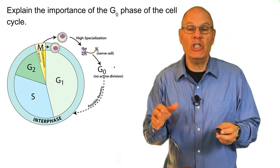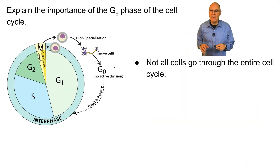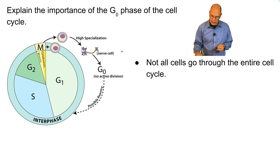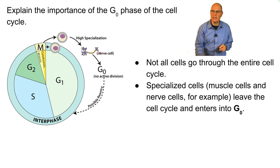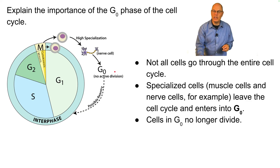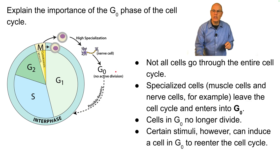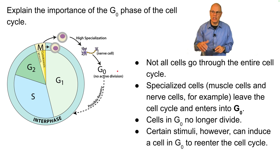Explain the importance of the G0 phase of the cell cycle. The basic idea is that not all cells go through the entire cell cycle. Highly specialized cells, like nerve cells or muscle cells, will leave the cell cycle and enter G0, after which they won't divide. However, certain stimuli can induce cells in G0 to re-enter the cell cycle.